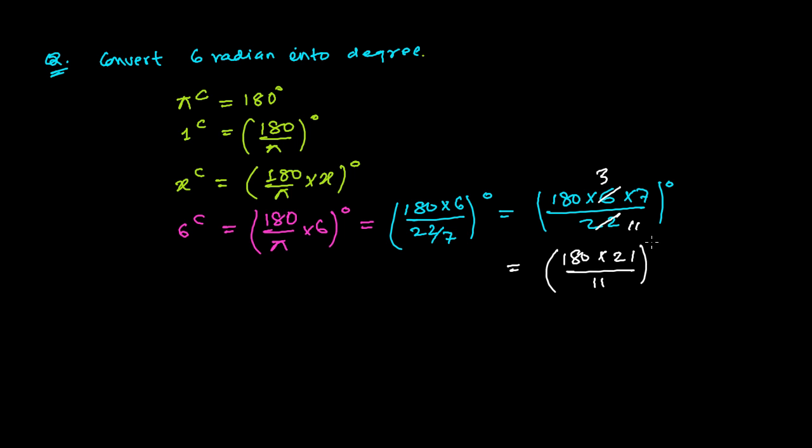Let me use the calculator and multiply 180 times 21. I'm getting 3780. This is 3780 divided by 11 degrees.